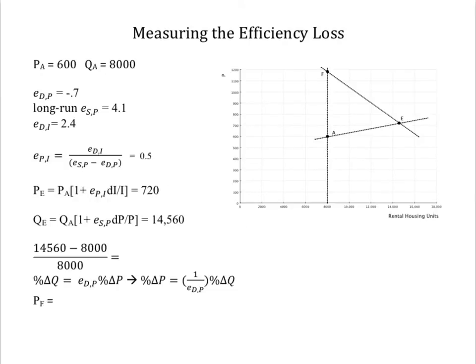So, starting at 14,560, we need to figure out what percentage change in price would have been needed to generate a 14,560 minus 8,000 divided by 8,000, or 45% reduction in quantity, and move us to point F on the graph.